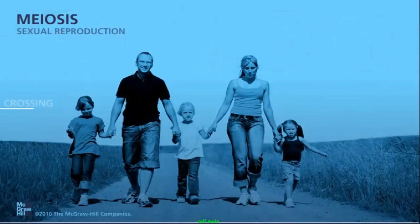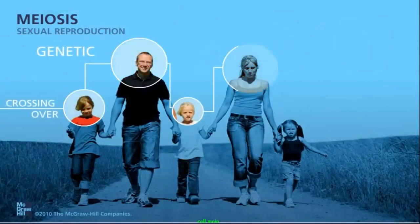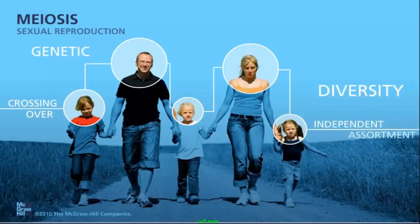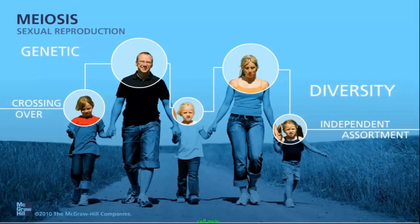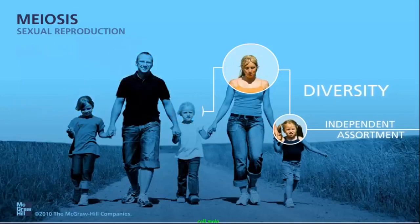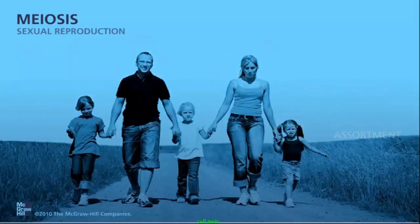The combination of independent assortment, crossing over, and the random pairing of gametes during sexual reproduction increases genetic diversity, and explains why a child will not look exactly like his or her parents or siblings.